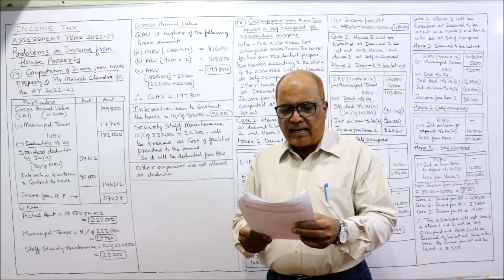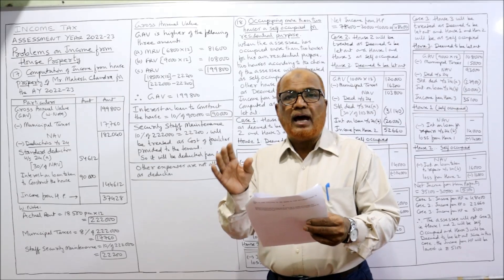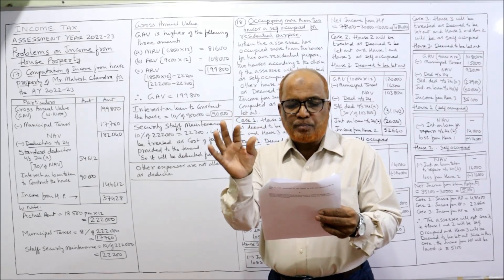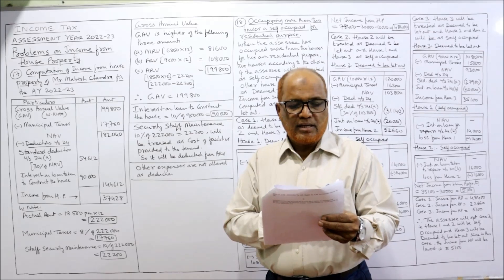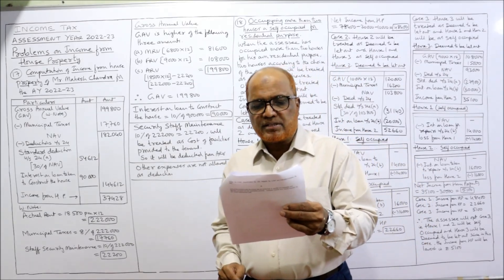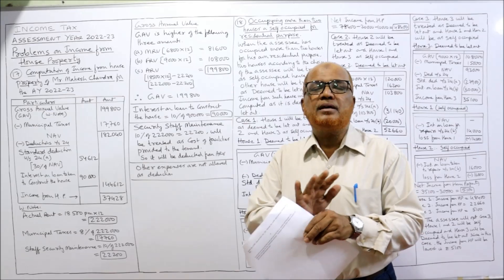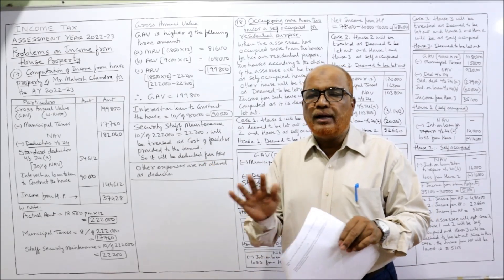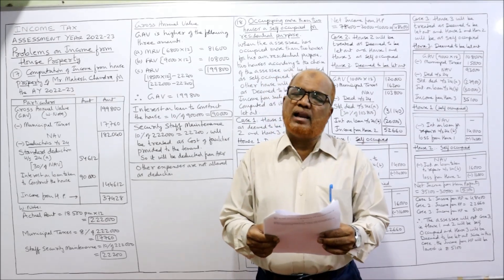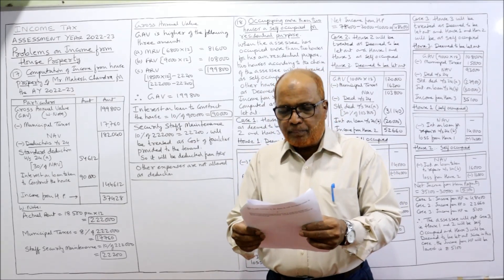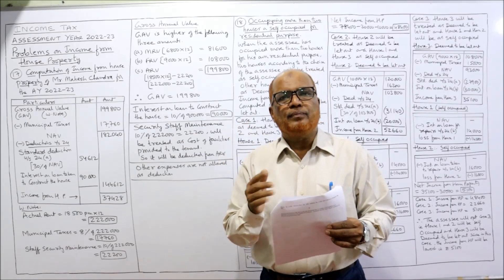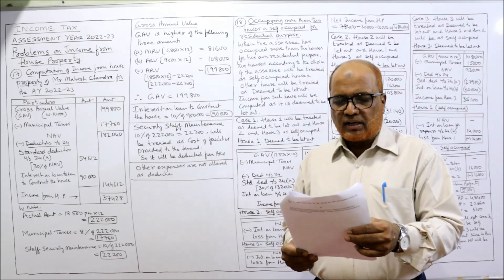During the previous year, his expenses on house are: municipal taxes 8% of rent received, staff security maintenance 10% of rent received, repairs 10%, insurance 3%. Repairs and insurance should be completely ignored because no deductions are allowed for repairs and insurance. Interest paid on loan taken to construct the house is allowed as deduction under section 24B — 10% on outstanding loan of 9 lakh, so 90,000. Compute the income from house property for the current assessment year.